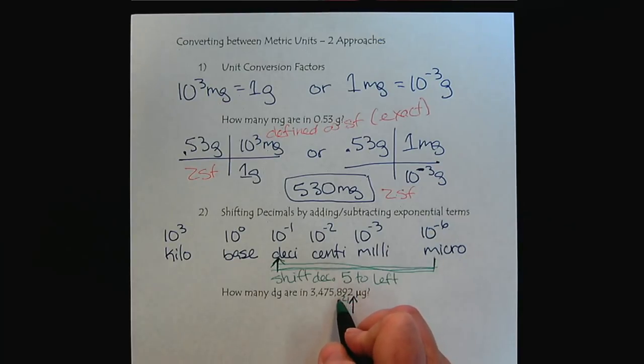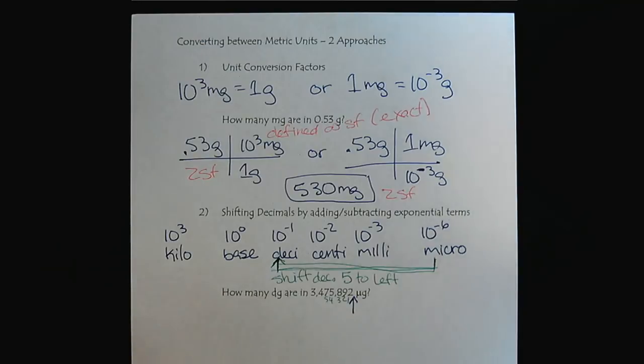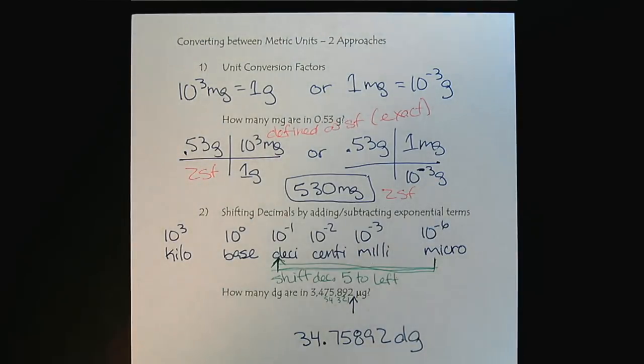One, two, three, four, five. So we would rewrite the value. This would become 34.75892 decigrams. So there is the shifting method. Let me demonstrate it for you one more time.